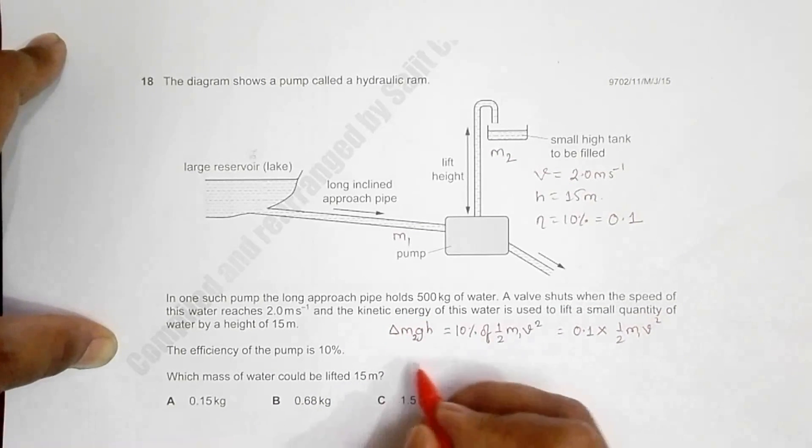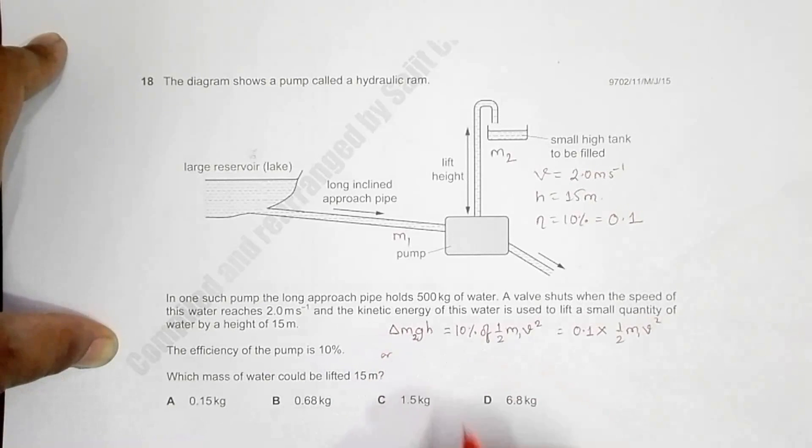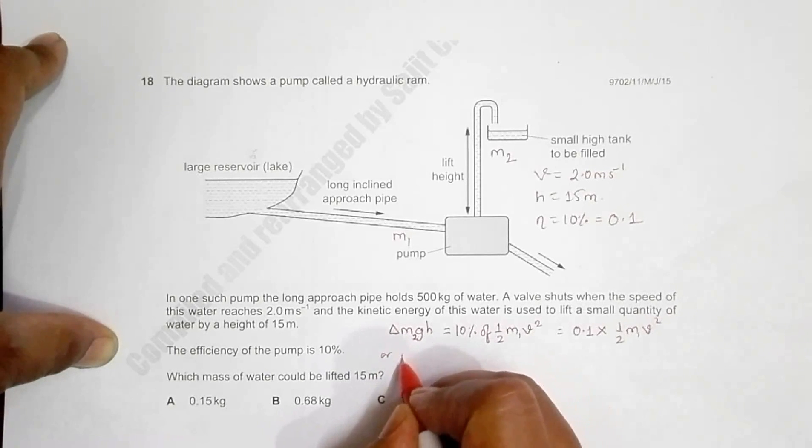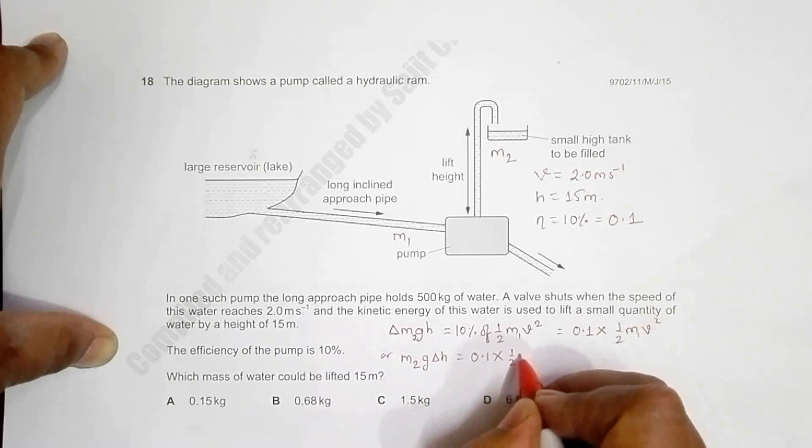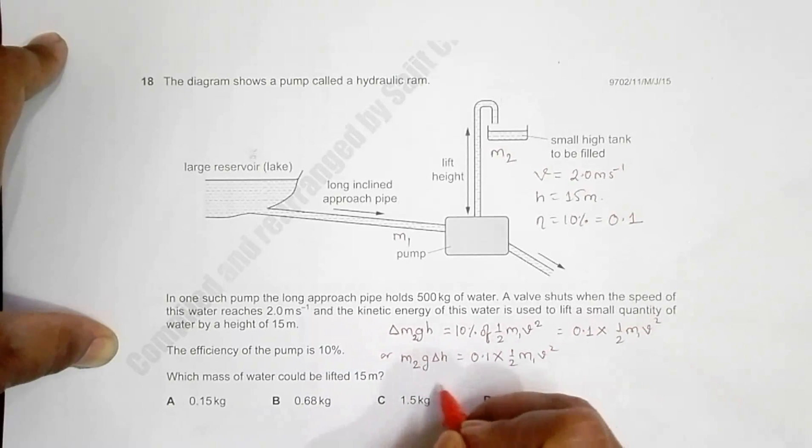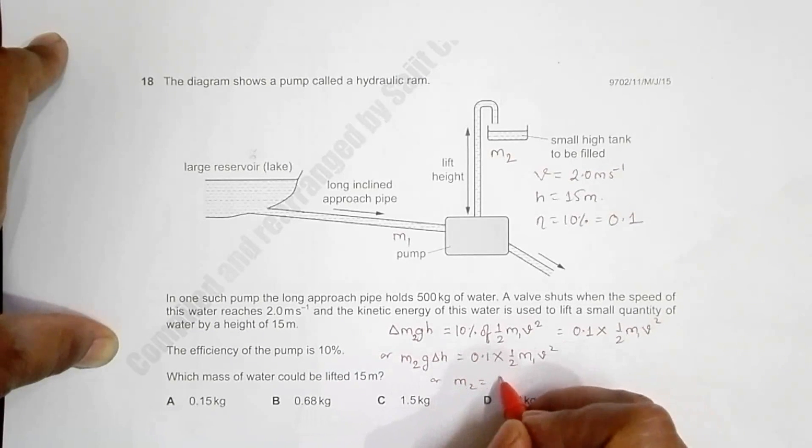So let us see now. I will have m2 times g times delta h equal to 0.1 into 1/2 m1 v squared. Which gives us m2 is equal to 0.1 into 0.5 times m1 times v squared divided by g times delta h.